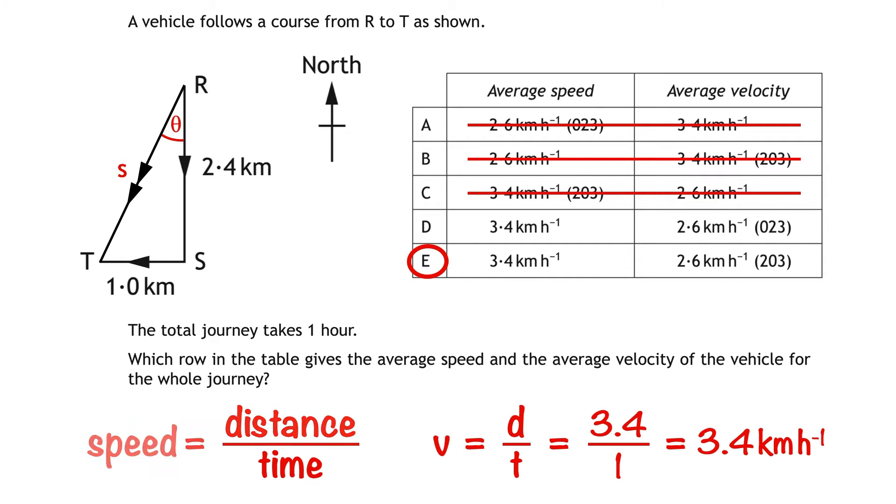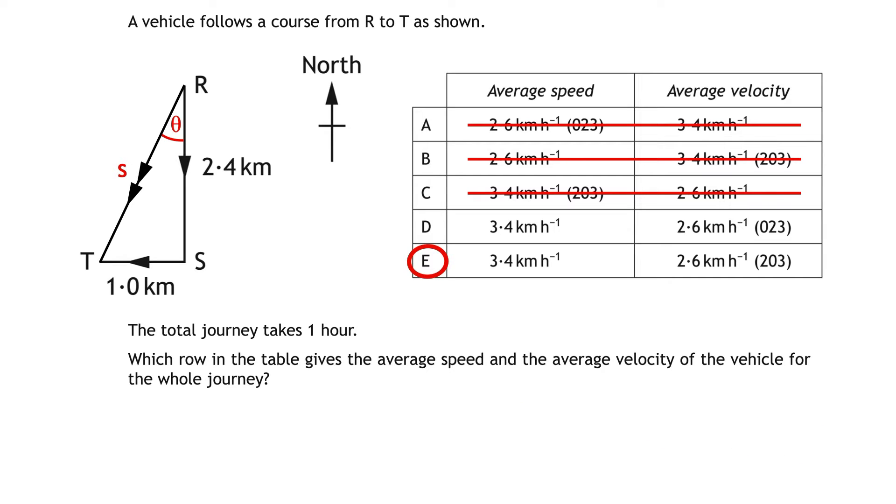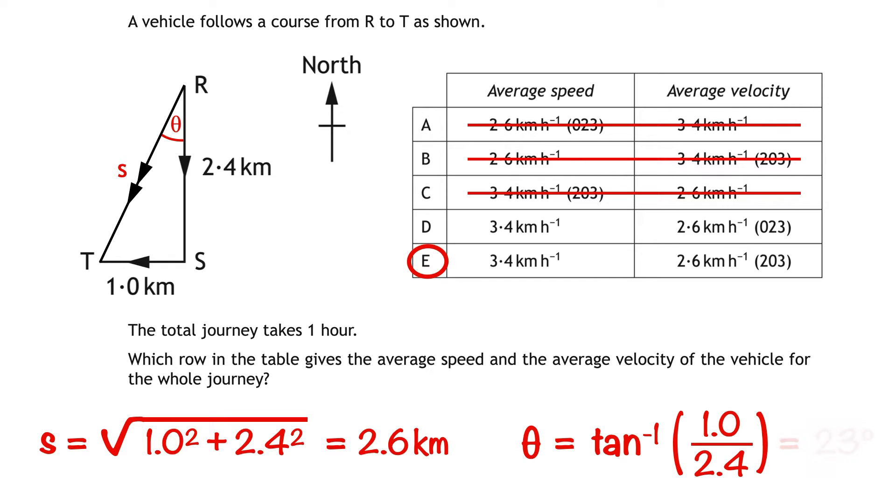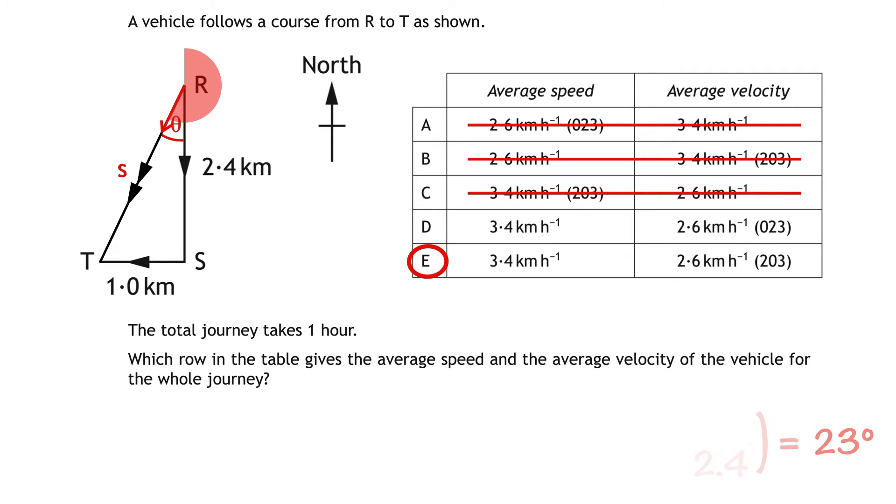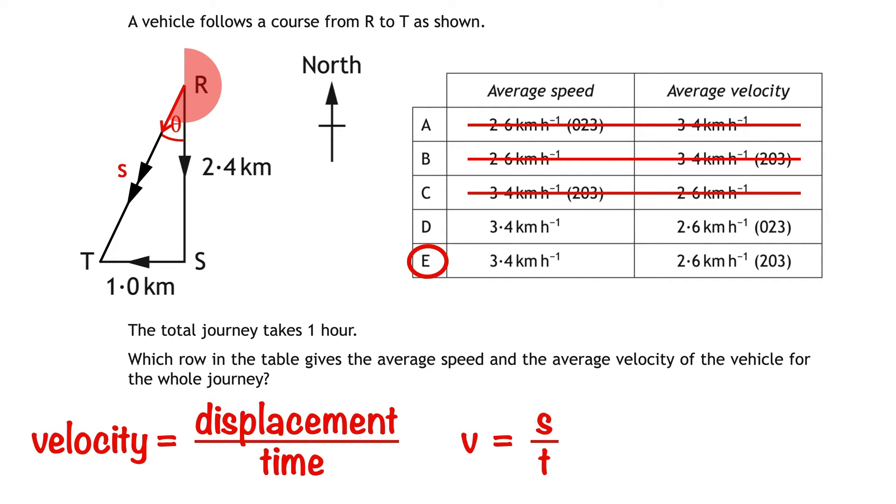If we did have to calculate the velocity we'd first calculate displacement S which would be the square root of 1.0 squared plus 2.4 squared which is 2.6 kilometres. Angle theta is tan to the minus 1, 1.0 divided by 2.4. That's opposite divided by adjacent which works out as 23 degrees. To find the direction of the displacement vector we'd have to add 180 to that angle giving us a bearing of 203. To calculate velocity we'd divide displacement by time. That gives us 2.6 divided by 1 which is 2.6 kilometres per hour. The direction of the velocity would be the same as the displacement, a bearing of 203.